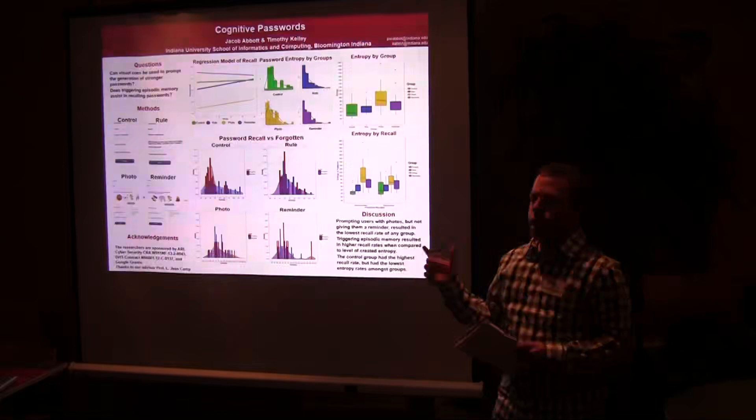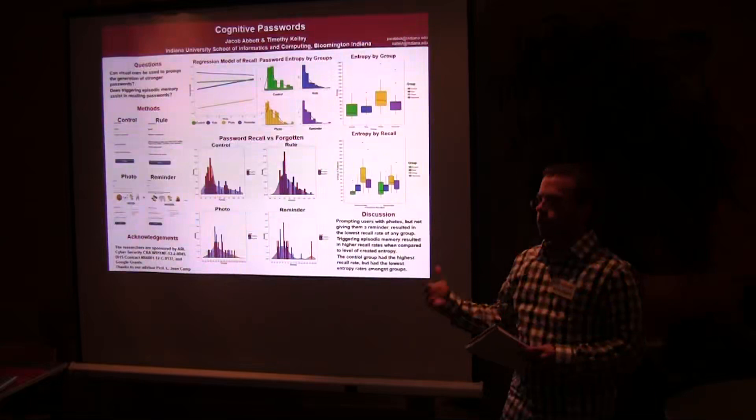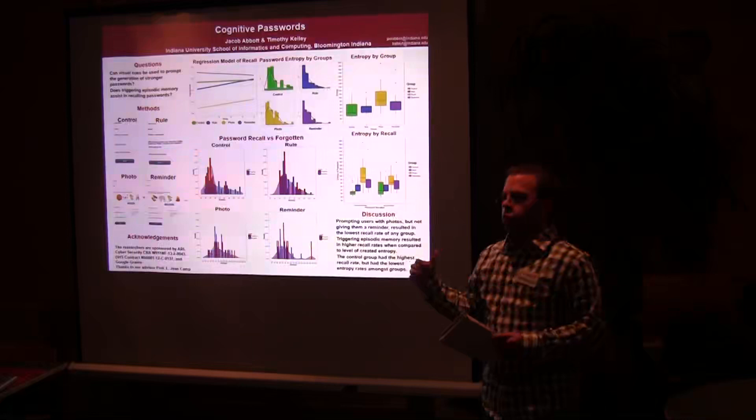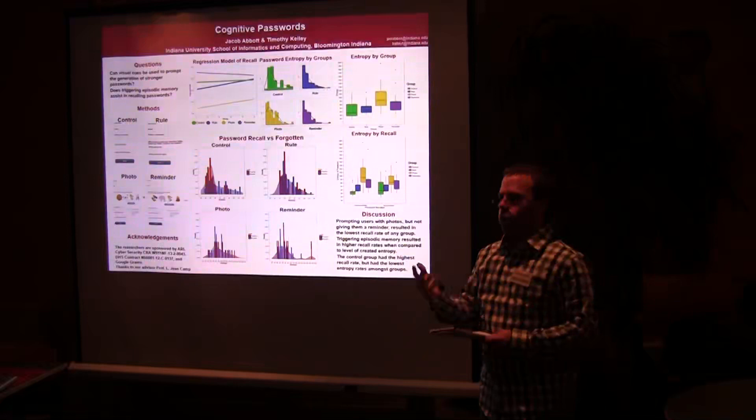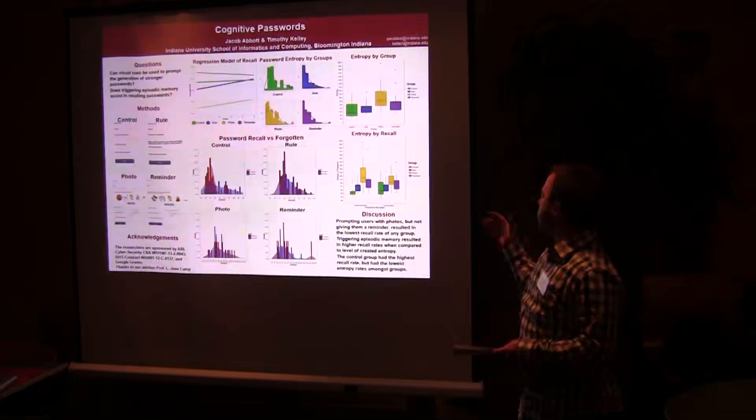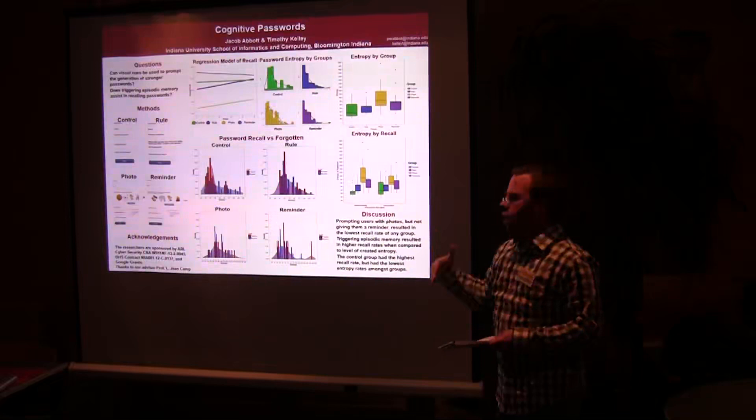When we got to the photo group, we actually found that they had the highest values for the entropy from the different characters that they built up and the length of their passwords. And then right behind it was the reminder group, which was actually slightly less than the photo group. But the difference is when we looked at how many actually recalled their password versus forgetting them.